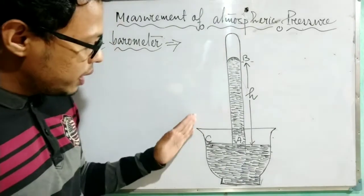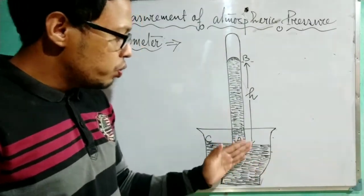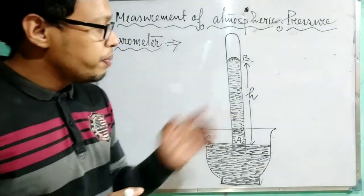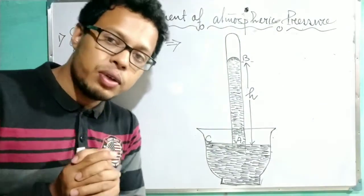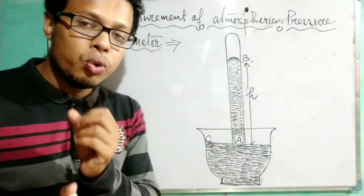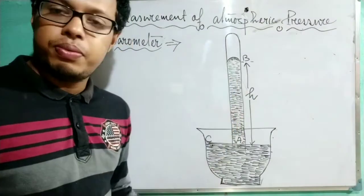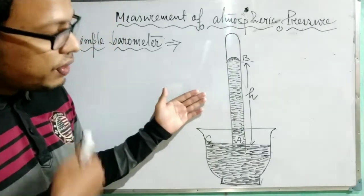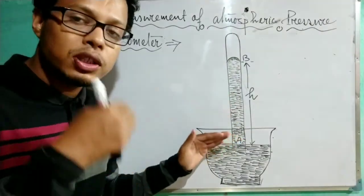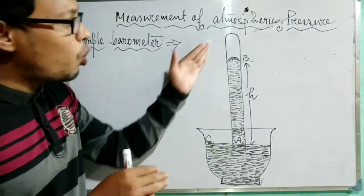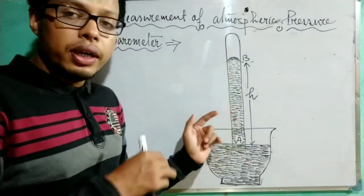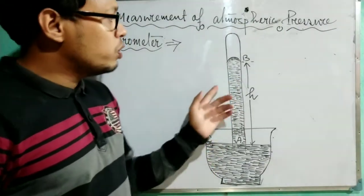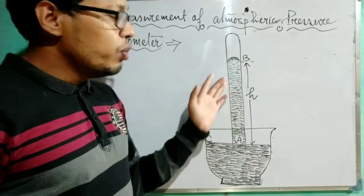First, the 100 centimeter tube is completely filled with mercury so that no air is present inside the tube. The open end is then closed by the thumb, and it is made upside down, by which all the air comes out from the tube.